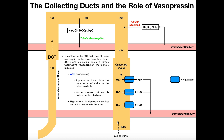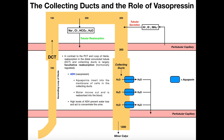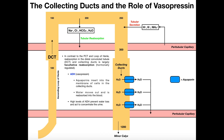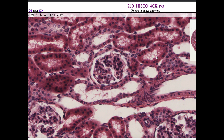We actually need to get rid of excess water in that case. From here, the fluid in the collecting ducts will ultimately move into the minor calyx. The collecting ducts fuse together into what's called a minor calyx, which then goes to a major calyx and ultimately to the renal pelvis, the ureter, and the bladder. We'll talk about that more in another video. Now let's switch gears and look at the histology of the distal convoluted tubule and the collecting ducts.